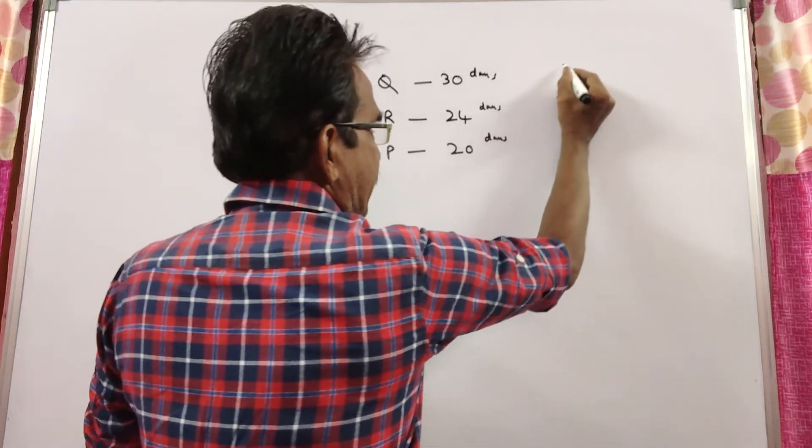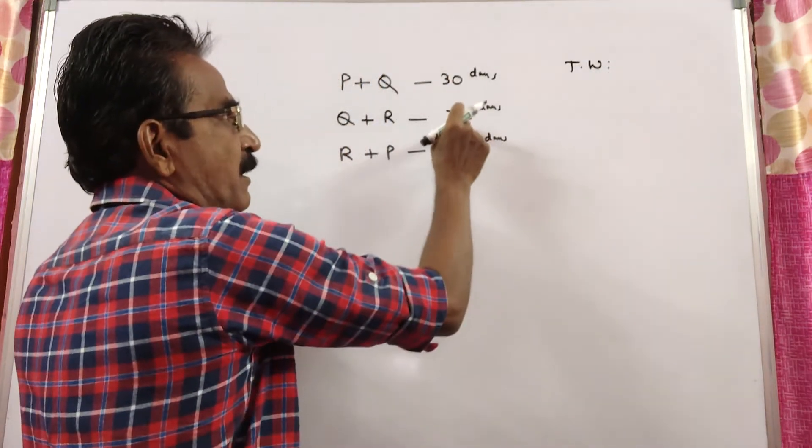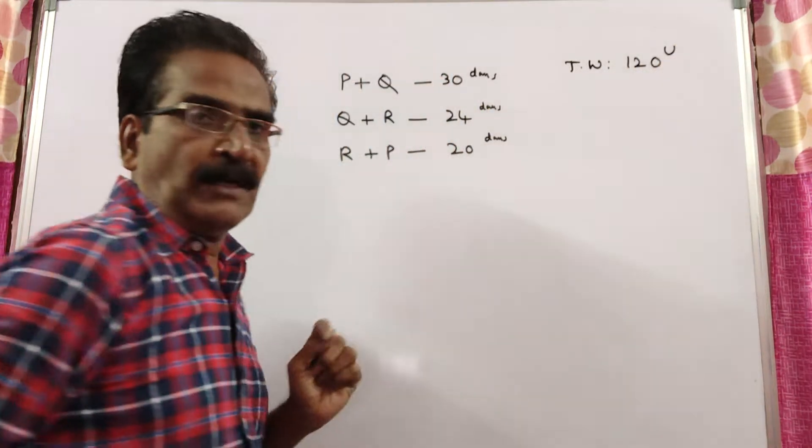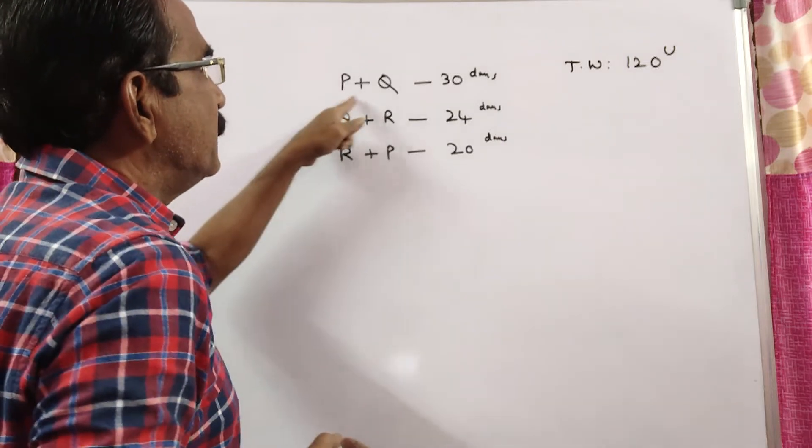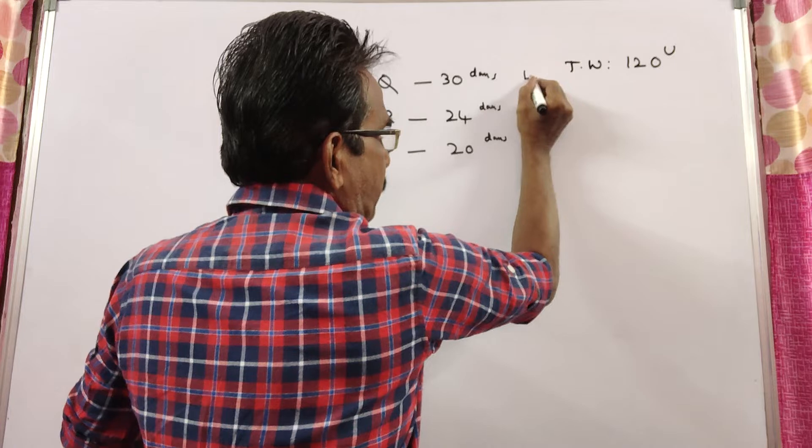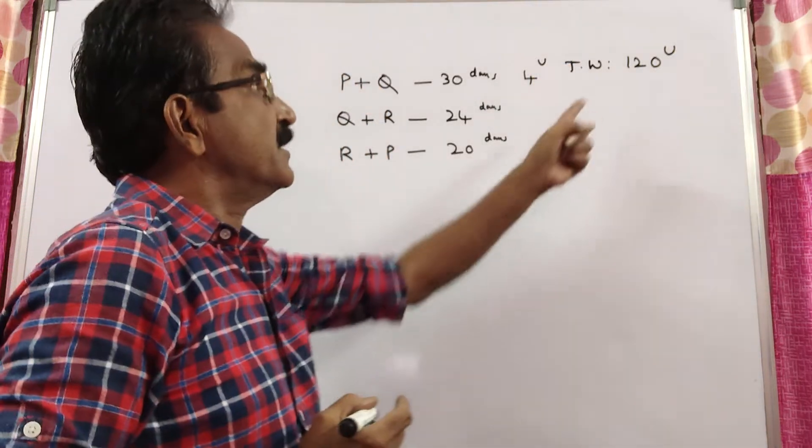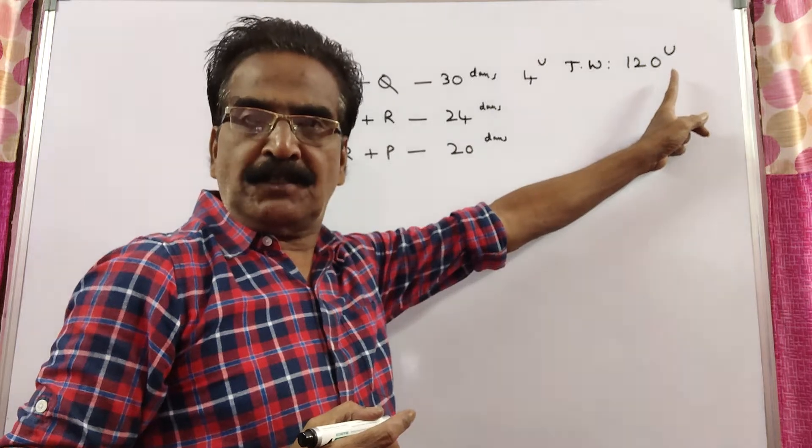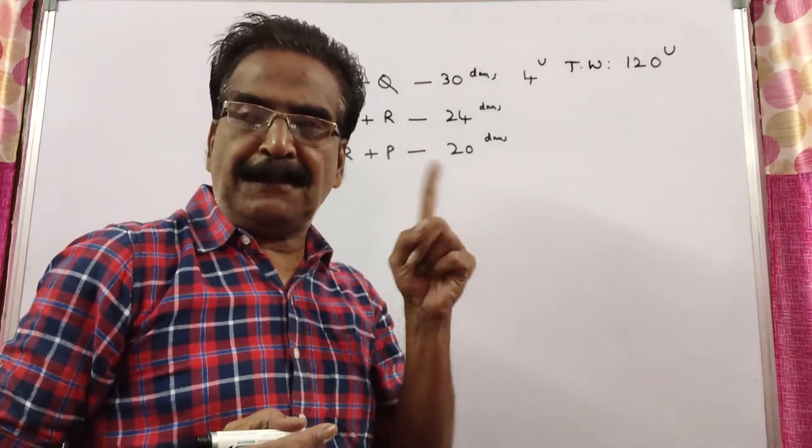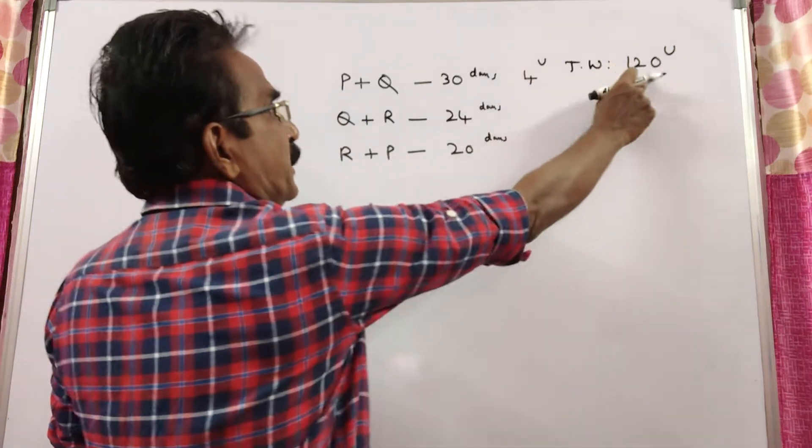See friends, say the total work, total work, LCM of this is 120 units. Total work say 120 units. That means P plus Q together can do 4 units of work per day, because they complete the total 120 units of work in 30 days. That means they can do 120 by 30, P plus Q together can do 4 units of work per day.